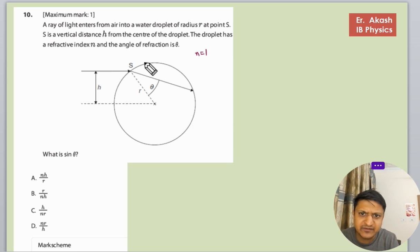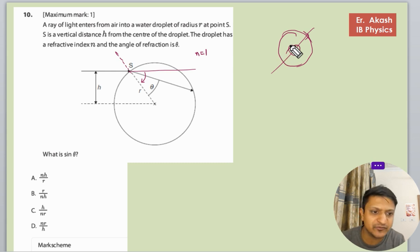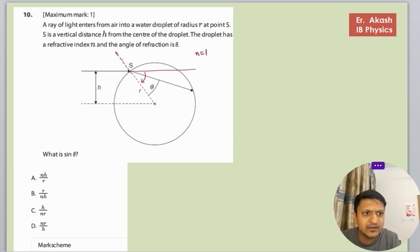The ray is coming like this. The ray was supposed to go like this, but as this droplet is a denser medium, it deflected towards the normal. The normal is always perpendicular to the surface, and in a circle, whatever line is perpendicular to the surface always passes through the center. These are the properties of a circle. We will not go deeper into the mathematical part; it's geometry basically.